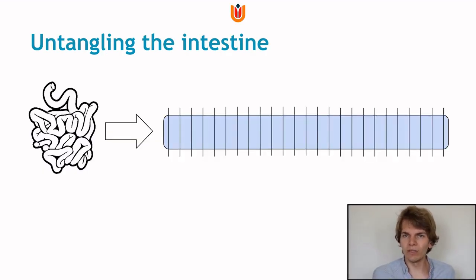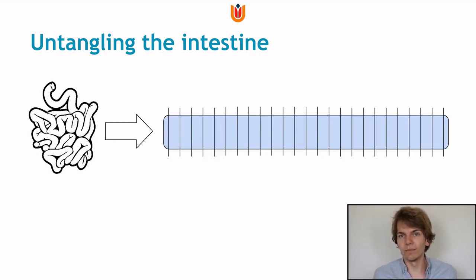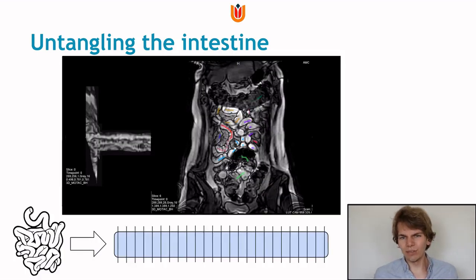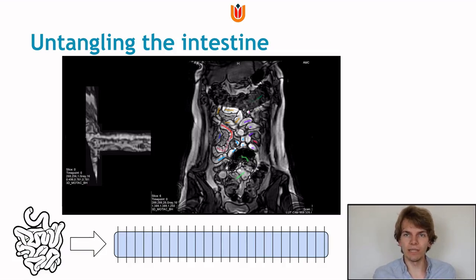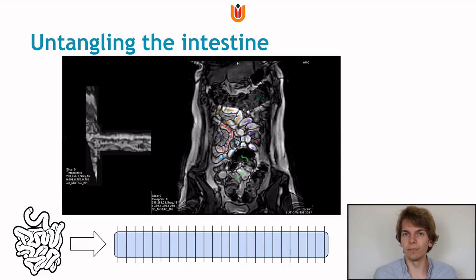To make evaluation of these images easier, we want to untangle the intestine — schematically, we stretch the bowel into a long tube. To get such a representation, we can draw a center line through the intestine and resample the image along this center line to form a multi-planar reconstruction, or MPR for short. Here on the left you see an MPR that corresponds to the manually annotated center line on the right, highlighted in pink.